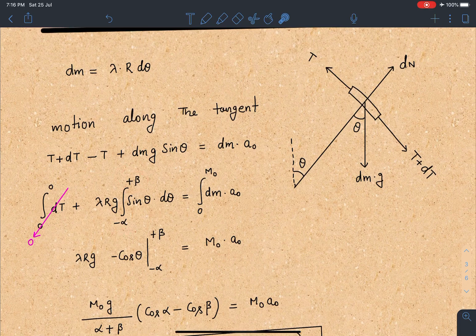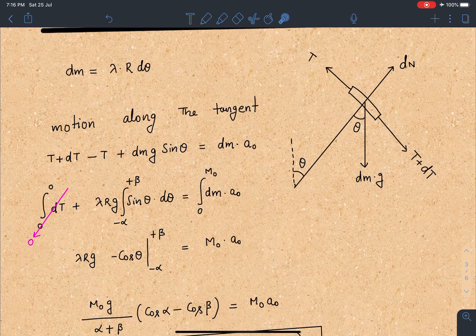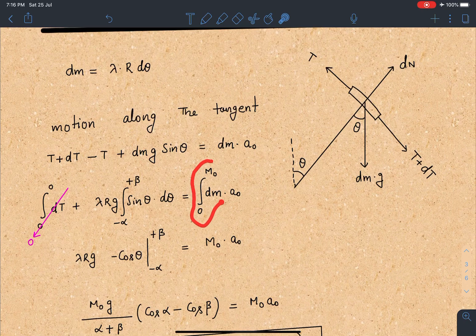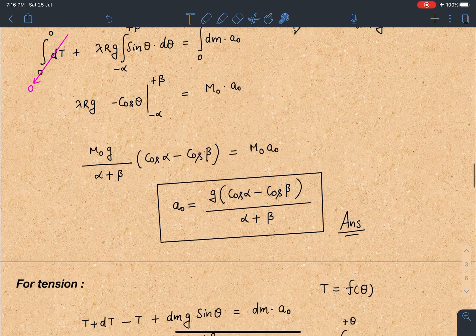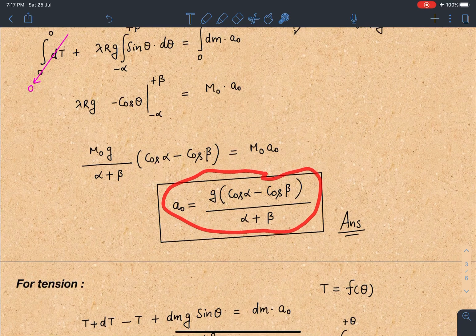When I simplify this I am going to get this a_naught as g cos alpha minus cos beta divided by alpha plus beta. This is going to be the answer of first part for us. Let's move to the second part.